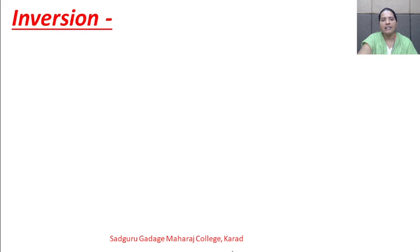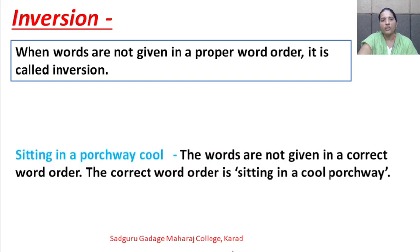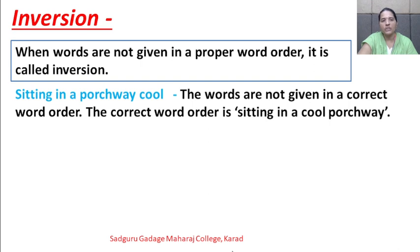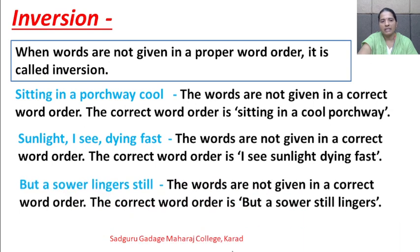The next poetic device is inversion. Inversion means when words are not given in a proper word order, it is called inversion. First example: 'Sitting in a porchway cool' — the words are not in correct word order; the correct order is 'sitting in a cool porchway'. Next: 'Sunlight I see dying fast' — correct order is 'I see sunlight dying fast'. Next: 'But a sower lingers still' — correct order is 'but a sower still lingers'.